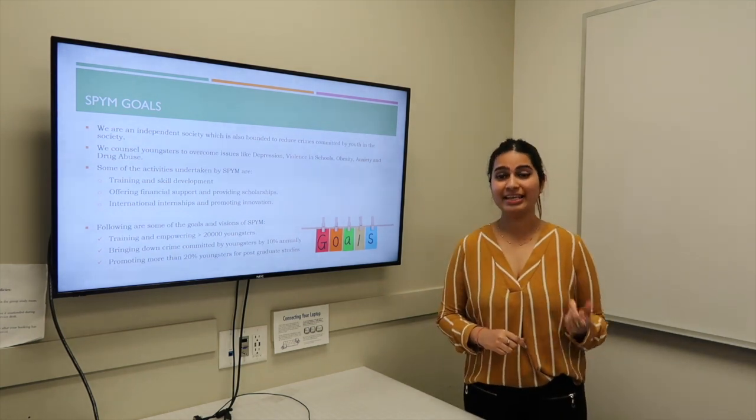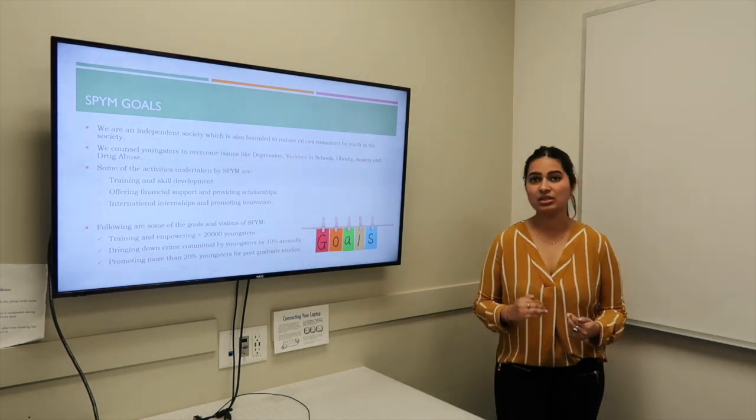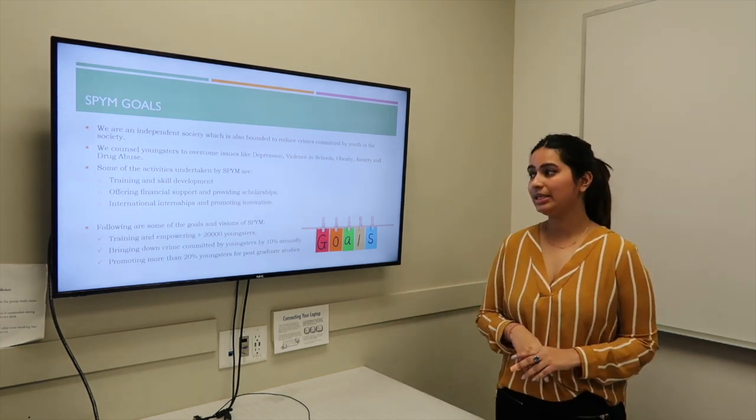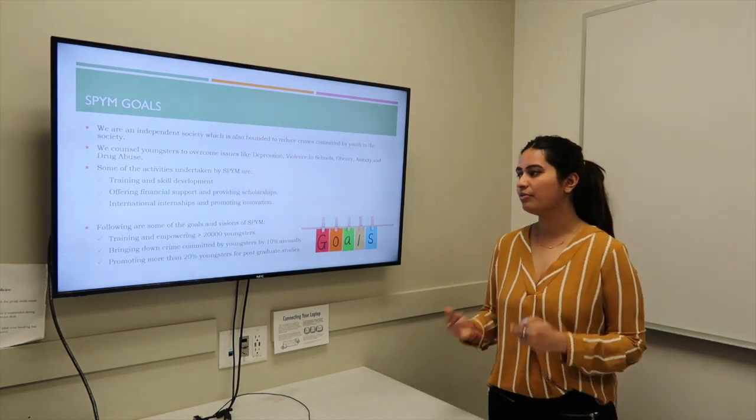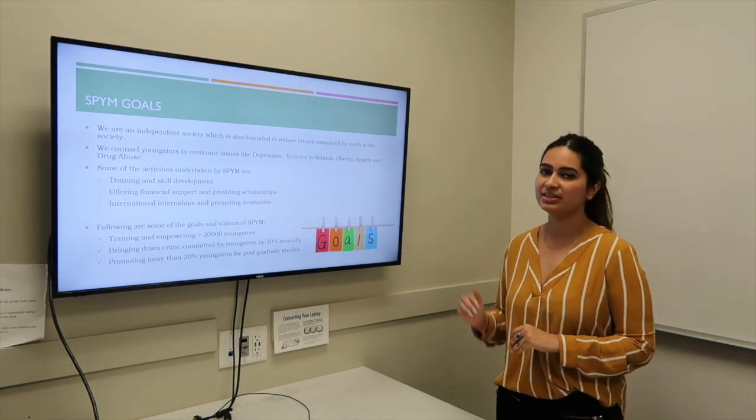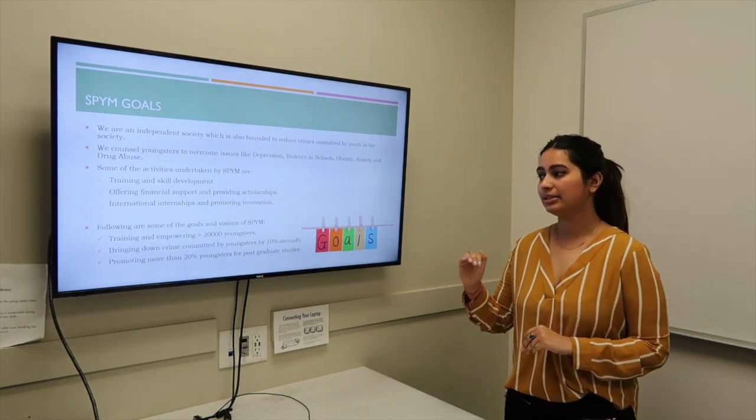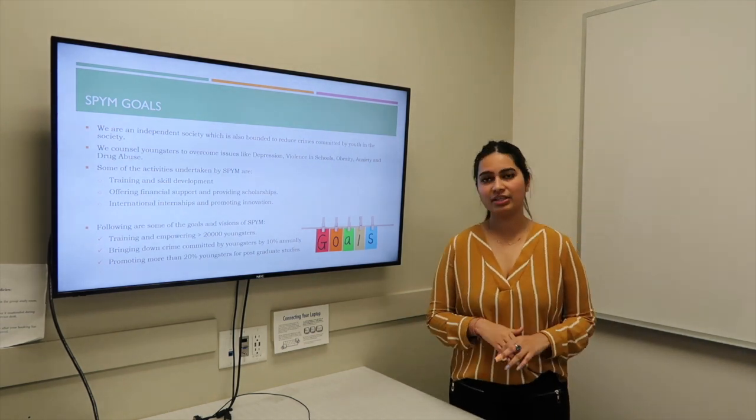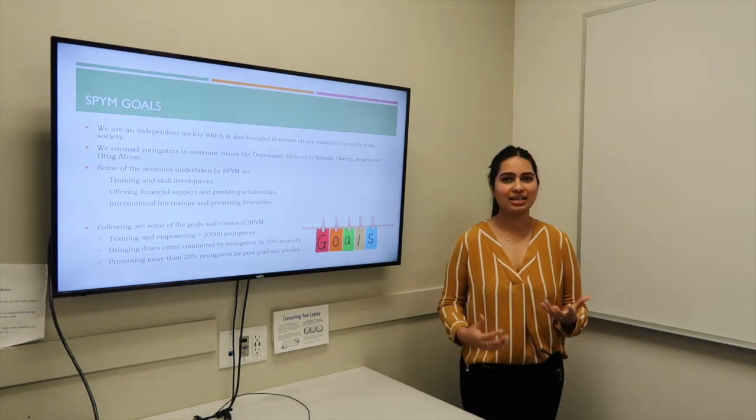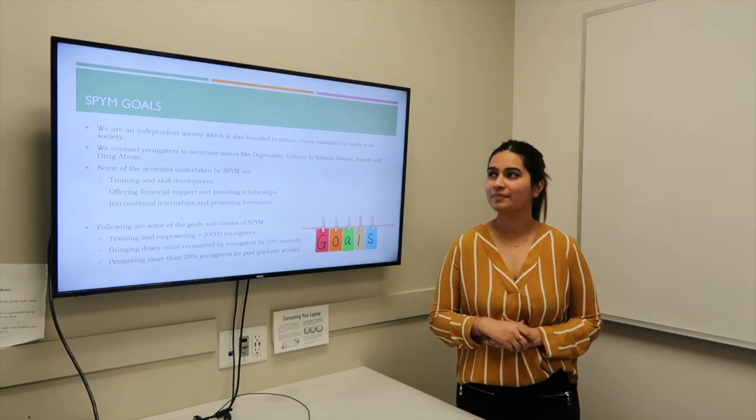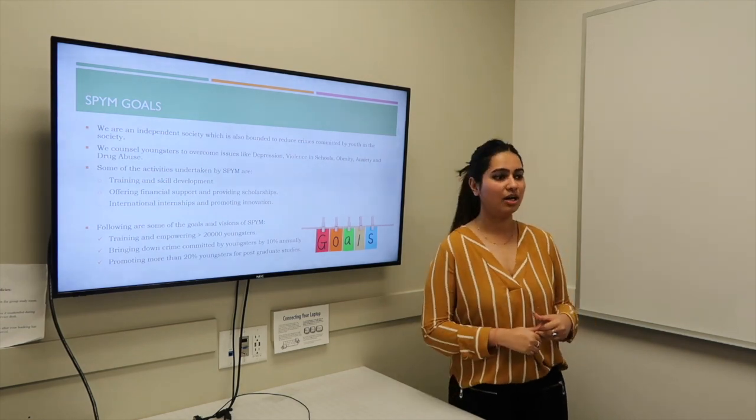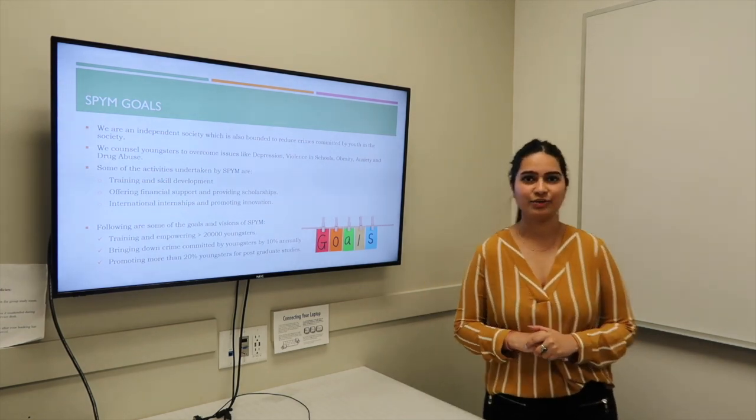These are the few goals we are looking into. The first would be training and empowering more than 20,000 youngsters in the coming year. Second would be lowering the crime rate committed by youngsters to 10% annually and the last would be promoting more than 20% of the youngsters to take postgraduate studies going ahead in their career. So these were the goals and now I would like to hand over the session to Mr. Piyush Sharma. Thank you.